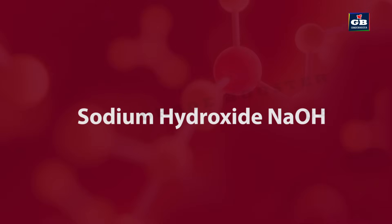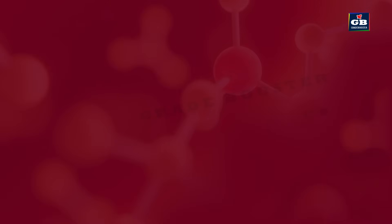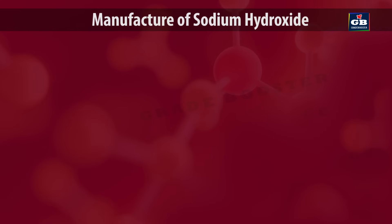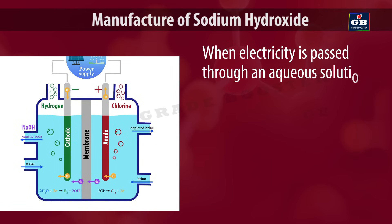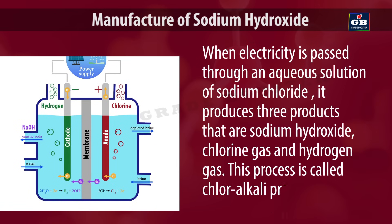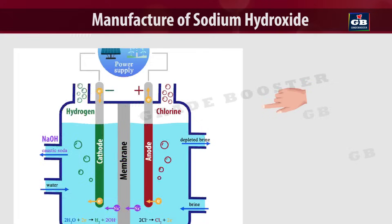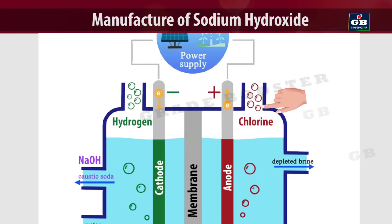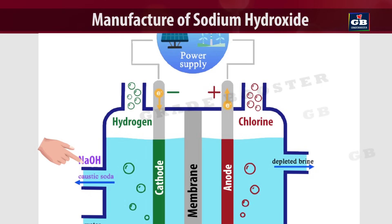Sodium hydroxide (NaOH) — Manufacture. When electricity is passed through an aqueous solution of sodium chloride, it produces three products: sodium hydroxide, chlorine gas and hydrogen gas. This process is called the chloralkali process. In this setup, chlorine gas is produced at the anode side, hydrogen gas is released at the cathode side, and sodium hydroxide is formed at the cathode.